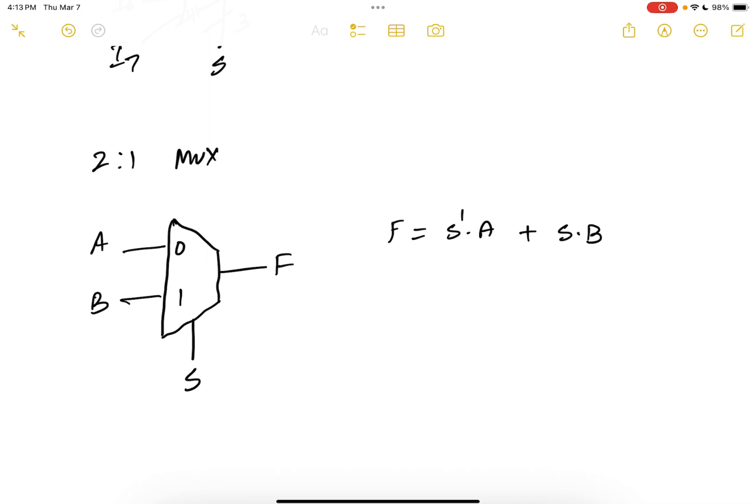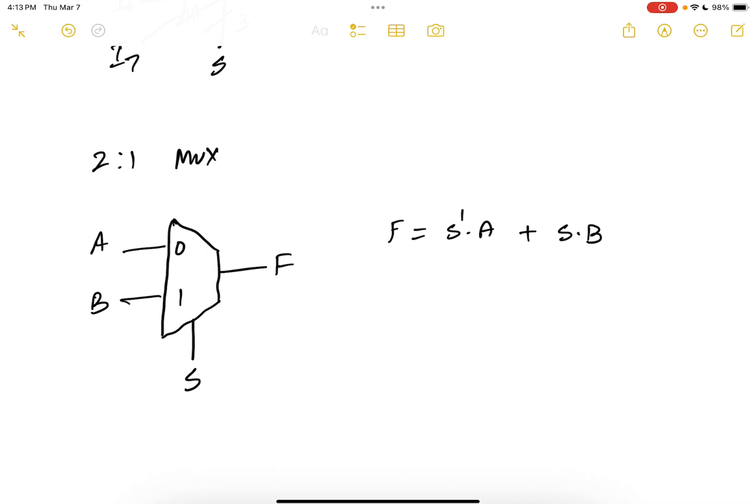In fact, you can also have A and B as multi-bit inputs to select input and output F. A can be a 4 bit and B can be a 4 bit. Note that both A and B should be of the same size. And your F will always be a 4 bit in this case. Because your F is either equal to A or it is equal to B, depending upon S.